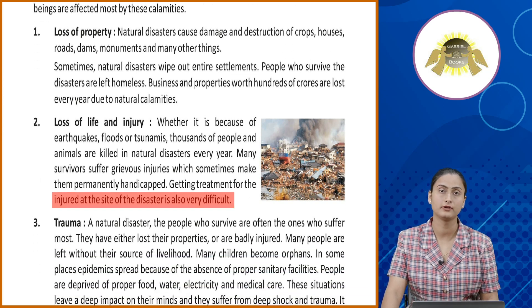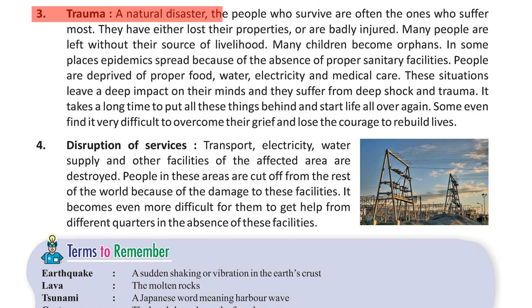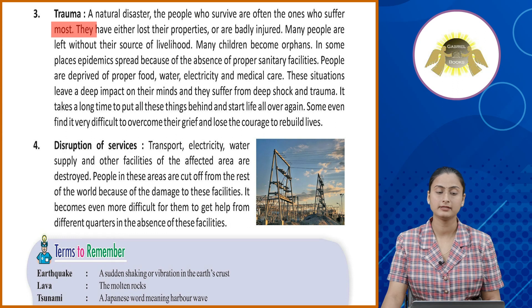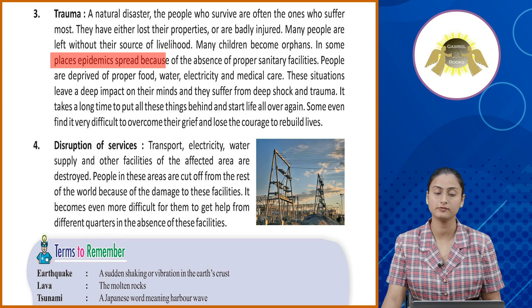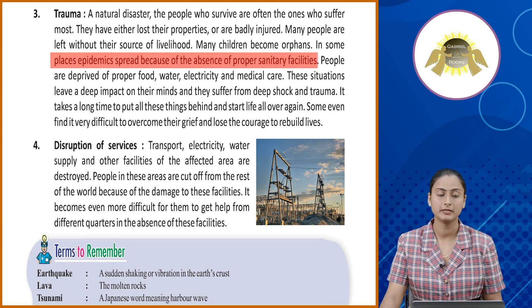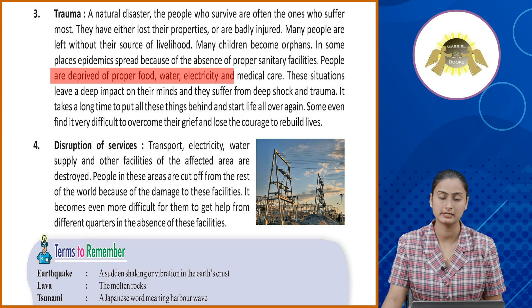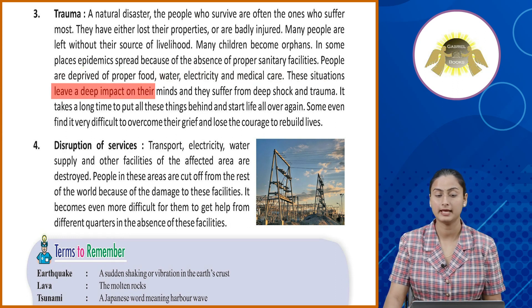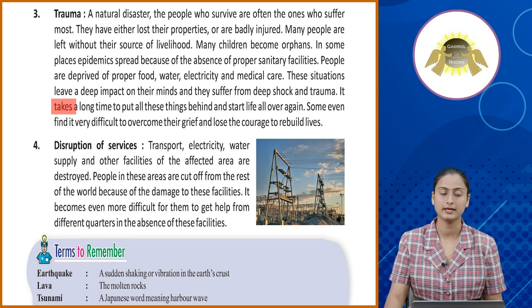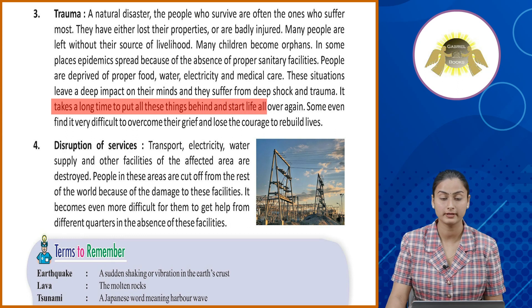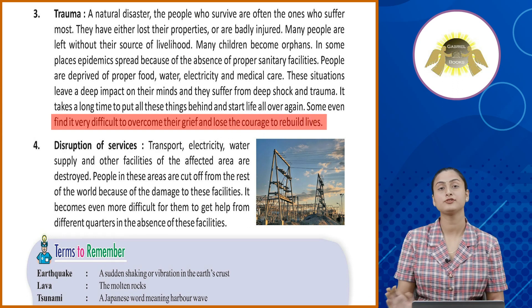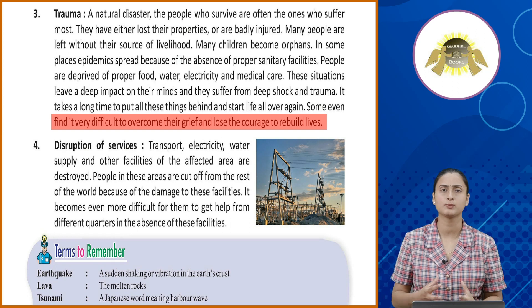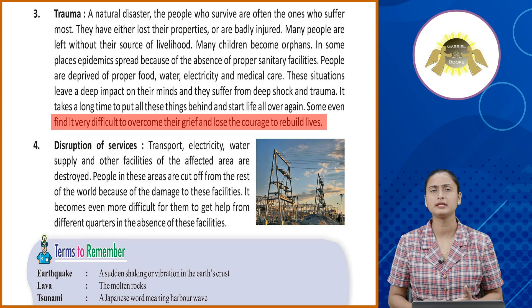Third, trauma. A natural disaster — the people who survive are often the ones who suffer most. They have either lost their properties or are badly injured. Many people are left without their source of livelihood. Many children become orphans. In some places, epidemics spread because of the absence of proper sanitary facilities. People are deprived of proper food, water, electricity and medical care. These situations leave a deep impact on their minds and they suffer from deep shock and trauma. It takes a long time to pull all these things behind and start life all over again. Some even find it very difficult to overcome their grief and lose the courage to rebuild their lives.